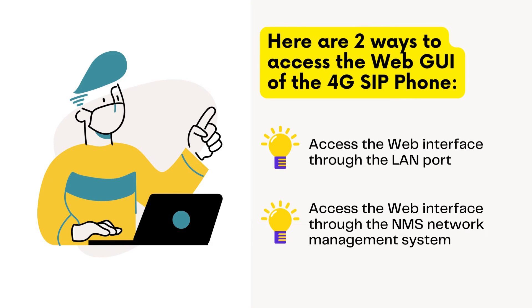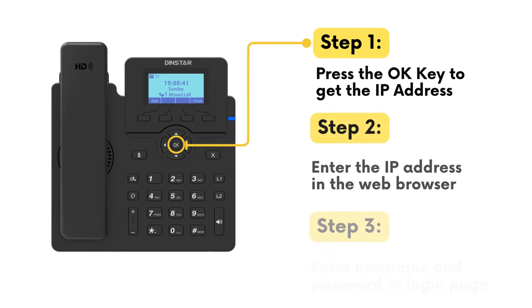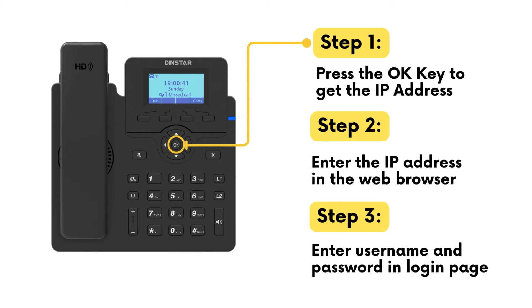For the first way, you just need to press the OK key on the RP phone, check the IP address of the phone, enter the IP address in the web browser, and then enter the right username and password.